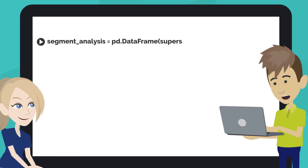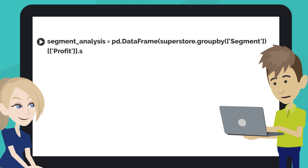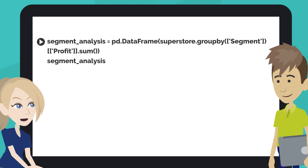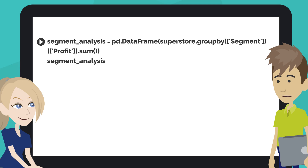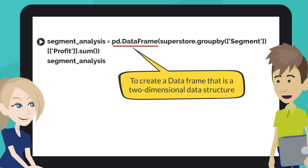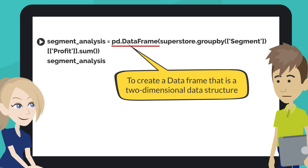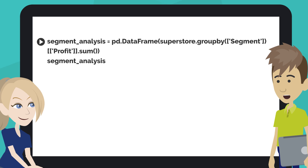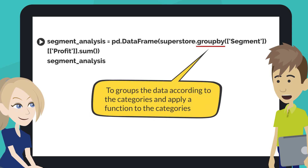Type the code like this into the next code cell of your notebook. What does this code mean? This code groups the total of profit by segment and creates the table. Pandas DataFrame function creates a data frame that is a two-dimensional data structure. The data is aligned in a tabular fashion in rows and columns. Pandas DataFrame.GroupBy function groups the data according to the categories and applies a function to the category.